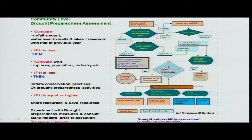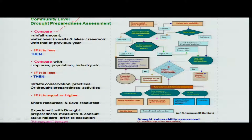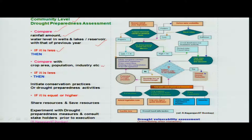Community-level participation in preparedness is also possible. Compare your rainfall — either quantitatively or using traditional knowledge — and compare water levels with those of previous good or bad years. If rainfall is less, compare it with crop and other areas, and if it is still less, initiate more conservation practices and activities.